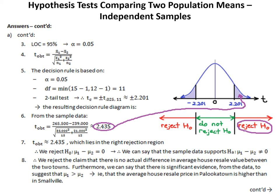Step 3: our level of confidence is 95%, so alpha equals 0.05. Step 4: t obtained equals x-bar 1 minus x-bar 2 over the square root of S1 squared over N1 plus S2 squared over N2. Step 5: degrees of freedom equals the minimum of 15 minus 1 and 12 minus 1, which equals 11. For a two-tailed test, t-critical equals plus or minus t at 0.025 and 11, which rounds to plus or minus 2.201. Step 6: t obtained equals 265,500 minus 239,000 divided by the square root of 35,000 squared over 15 plus 21,000 squared over 12, which rounds to 2.435.